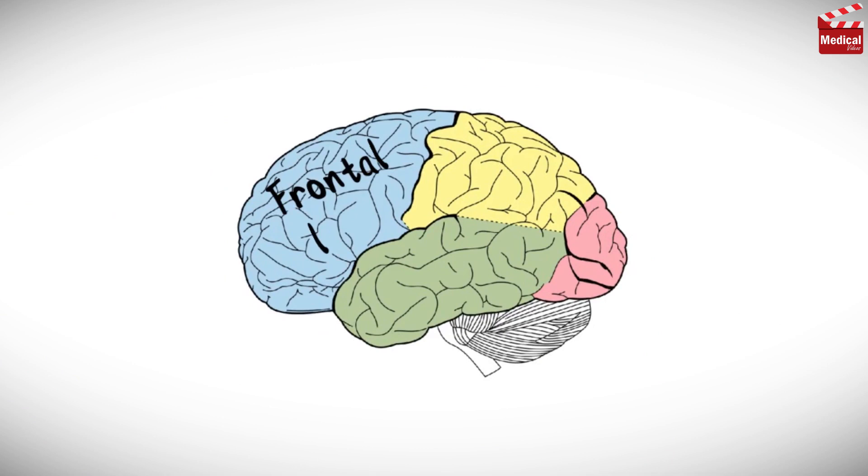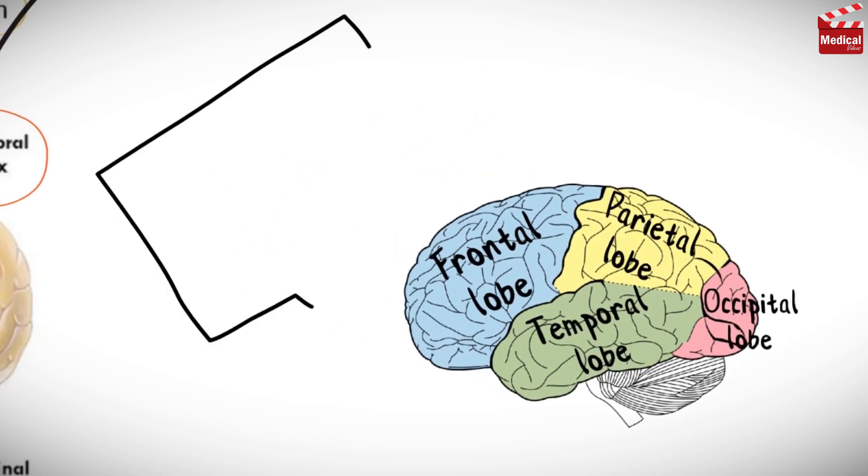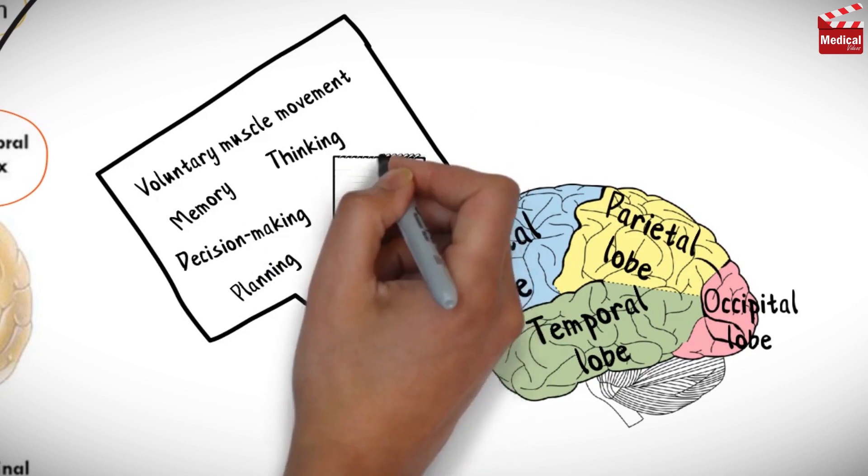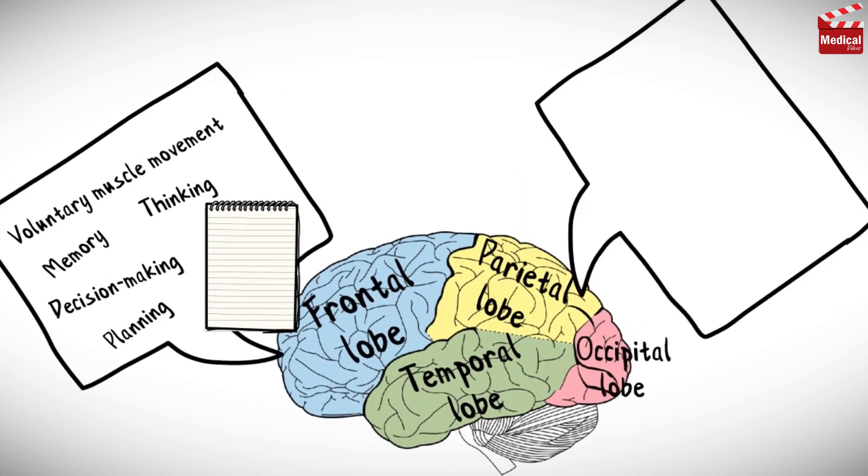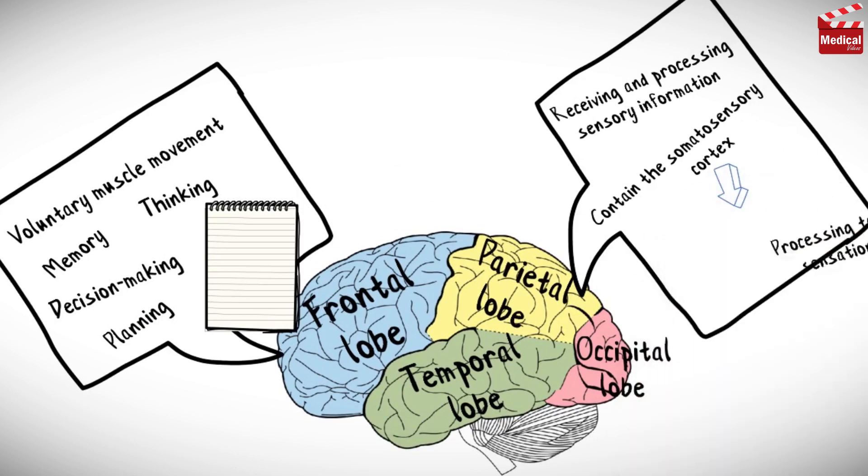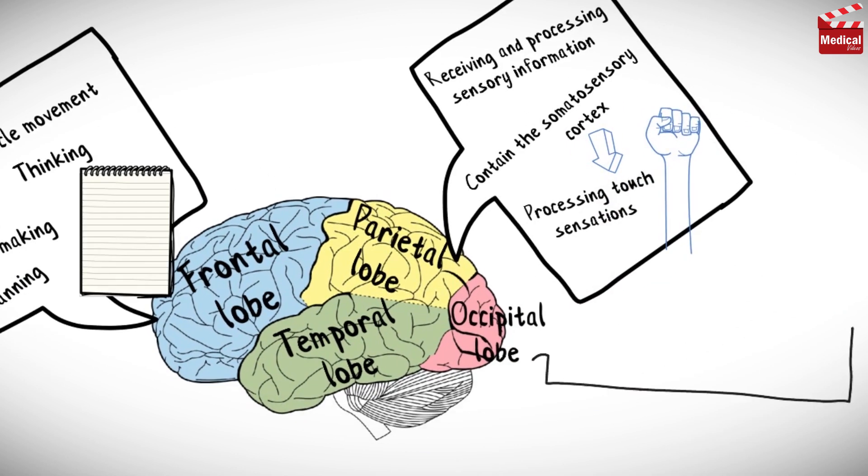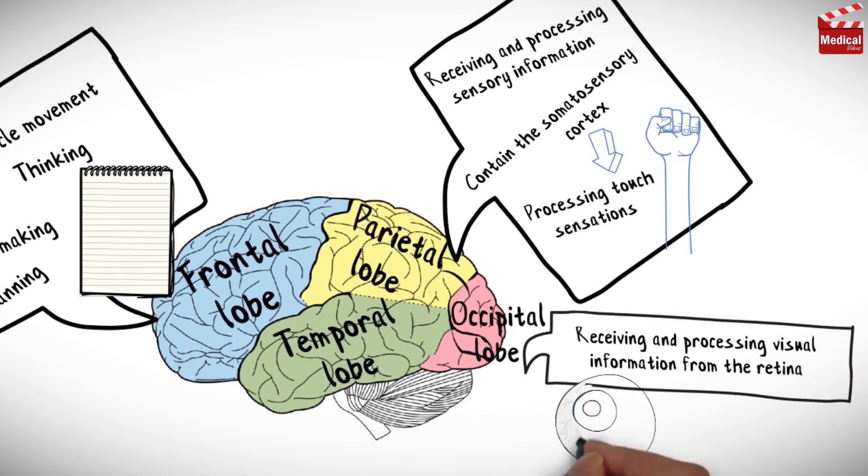These include the frontal, parietal, occipital, and temporal lobes. Frontal lobes function in voluntary muscle movement, memory, thinking, decision making, and planning. Parietal lobes are responsible for receiving and processing sensory information. These lobes also contain the somatosensory cortex, which is essential for processing touch sensations. Occipital lobes are responsible for receiving and processing visual information from the retina.